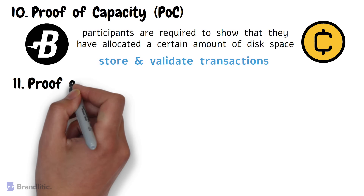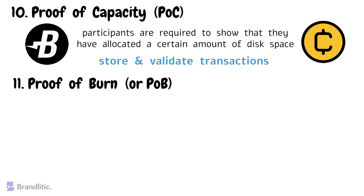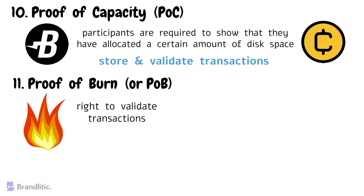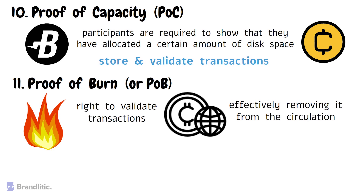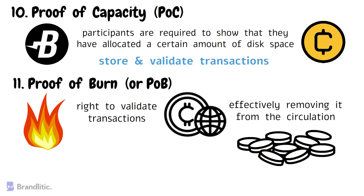Number eleven: Proof of Burn, or POB. This is a consensus algorithm that requires participants to burn a certain amount of cryptocurrency in exchange for the right to validate transactions on the network. To burn the crypto, it is sent to an unspendable address, effectively removing it from circulation. Once this is recorded, the participant is rewarded with a proportional amount of new cryptocurrency created by the network.